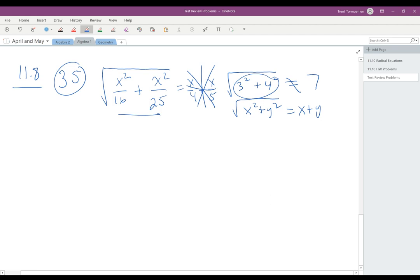So we got a common denominator. That's going to be 16 times 25, which is 400 because 16 and 25 have nothing in common. So that's going to give you 25 x squared there because you multiply the numerator and the denominator by 25.